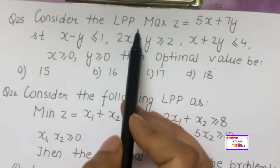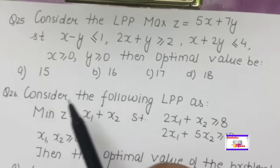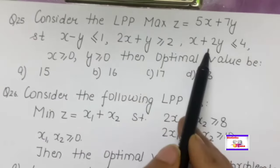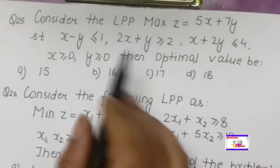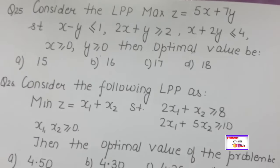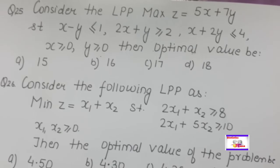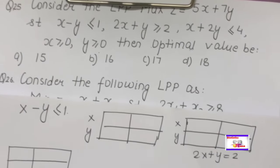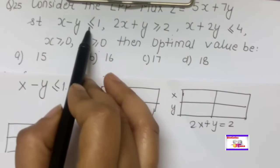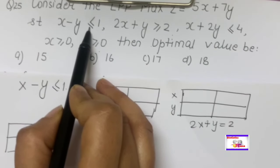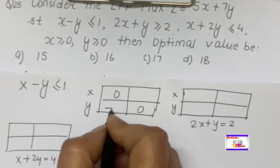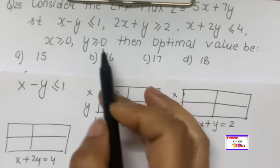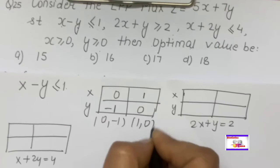Consider an LPP: maximize the objective function subject to given constraints and non-negativity restrictions. LPP is a bit time-consuming. To solve, treat each constraint as an equality (straight line), find intercepts by setting x = 0 and y = 0. For the first constraint: when x = 0, y = −1; when y = 0, get the corresponding x-value. Plot these points.